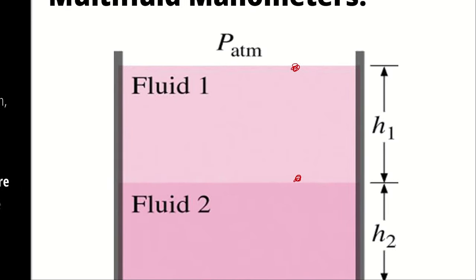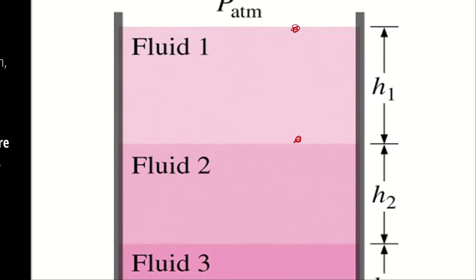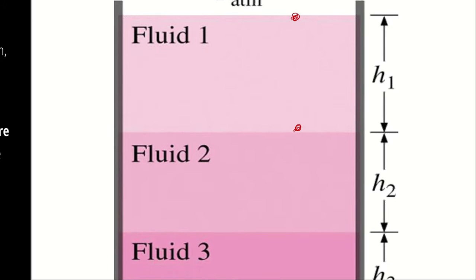We could figure out the pressure difference between atmospheric pressure and the interface between fluid 1 and fluid 2 by using the density of fluid 1 times gravity times H1. And then we could figure out the pressure difference between fluid 2 and fluid 3 by using the density of fluid 2 times gravity times H2.